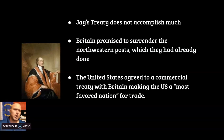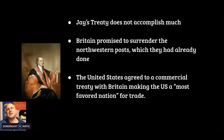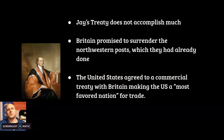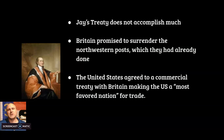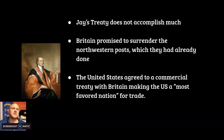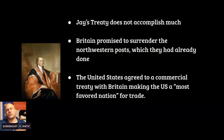So Jay was left trying to get whatever he could. The two major accomplishments of Jay's Treaty were: first, Britain promised again to surrender the Northwestern posts — which they had already promised but never done. Second, the United States agreed to a commercial trade treaty with Britain, making the U.S. a most favored nation for trade, which made Hamilton happy. Jay's Treaty was very unpopular with Americans, who felt the U.S. had just given in to British demands.